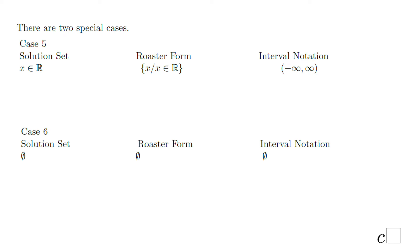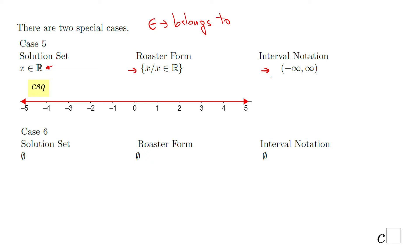Here are two special cases. Whenever you solve your inequality, you can get a solution set like this one, which says x belongs to ℝ — this means belongs to the set of real numbers. The interval notation is negative infinity, comma, infinity, and both of them with parentheses — remember, with infinity you cannot use brackets. The graphical way shows the whole number line shaded.